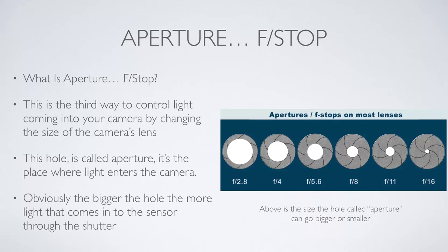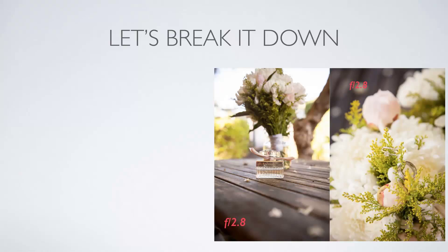Obviously, the bigger the hole the more light is allowed into the camera, and the smaller the hole the less light is allowed in. For example, if you wanted to shoot a landscape and wanted the sky nice and blue, you would need a small aperture — f8 or above — because you don't want the light to blow out your sky and make it white instead of that beautiful blue color.